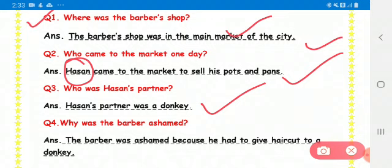Why was the barber ashamed? The barber was ashamed because he had to give haircut to a donkey.